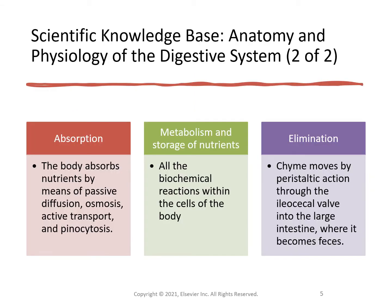The body absorbs nutrients by means of passive diffusion, osmosis, active transport, and pinocytosis. Metabolism and storage of nutrients — all biochemical reactions within the cells of the body is where metabolism occurs and nutrients are stored. For elimination, chyme moves through peristaltic action through the ileocecal valve into the large intestine where it becomes feces, and then we also have urinary elimination.